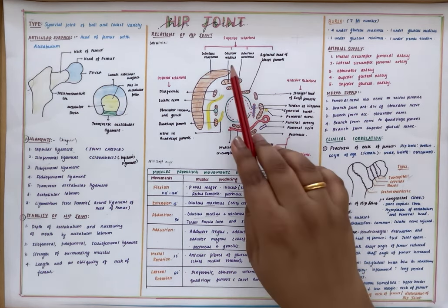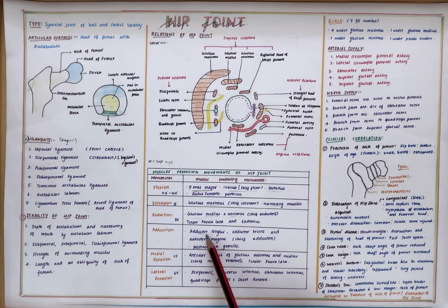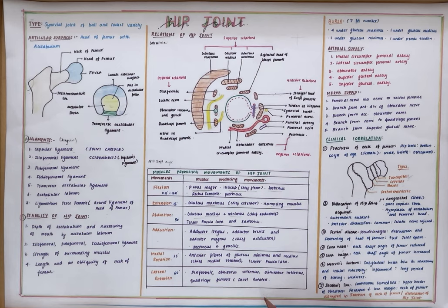The abductors are also the medial rotators — again, the gluteus medius and gluteus minimus. Adduction is by the adductor group of muscles, namely adductor longus, adductor brevis, and adductor magnus. Lateral rotation is by the piriformis, obturator externus, obturator internus, quadratus femoris, and the other short rotators.